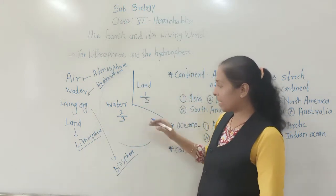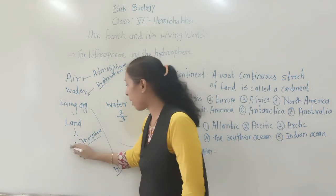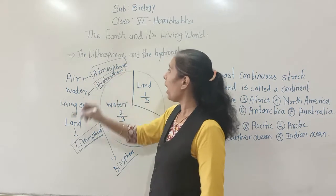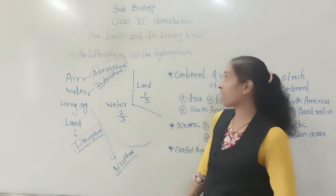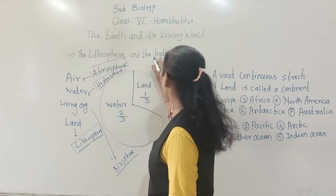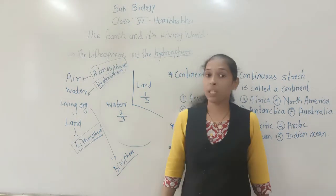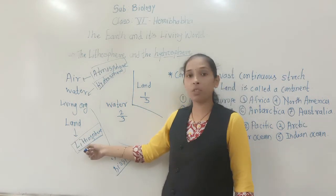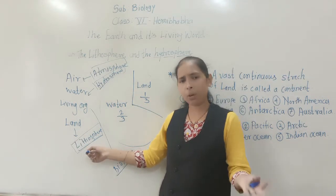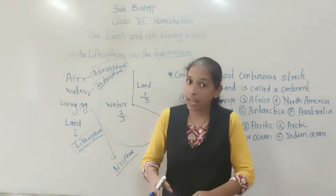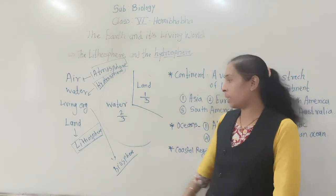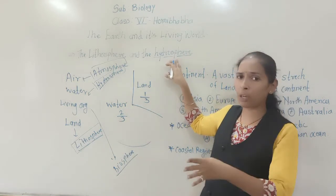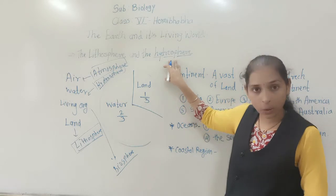Next, we will discuss mostly about the lithosphere, hydrosphere, and atmosphere. The lithosphere is the part of the earth covered with land. The hydrosphere is the part of the earth that contains water.